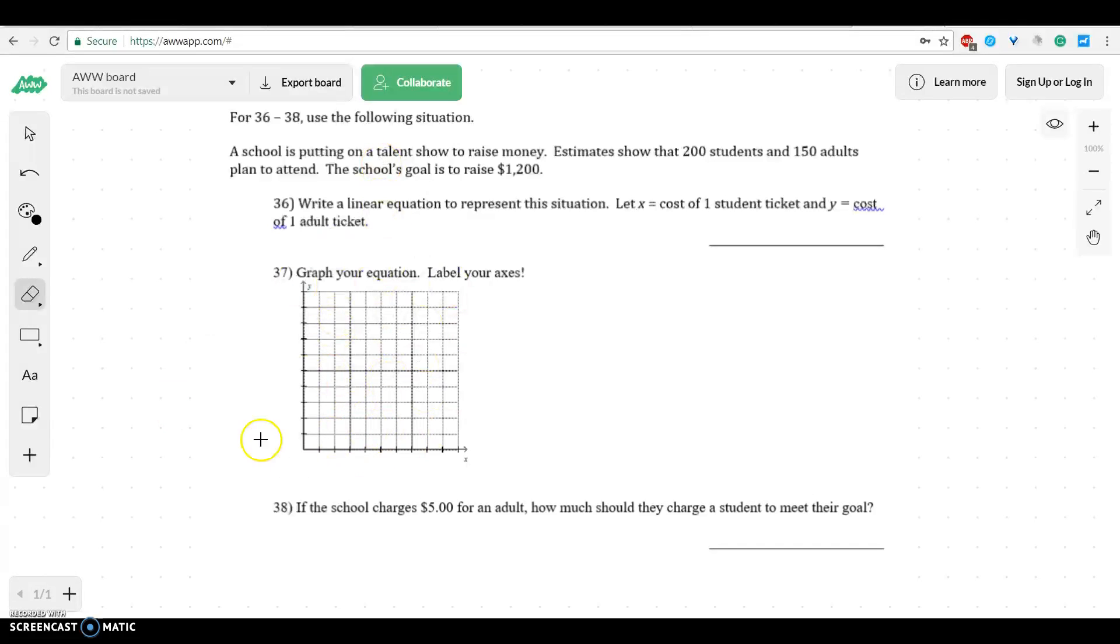For this one, they give you this graph here and they want you to use it. I actually want to use it because I think it's going to be easier. But we don't exactly have to use this graph for this one. So it says, a school is putting together a talent show. They estimate that they have 200 students and 150 adults that plan to go. And the school's goal is to raise $1,200. We're writing a linear equation to represent the cost, X, of one student ticket and Y, the cost of one adult ticket.